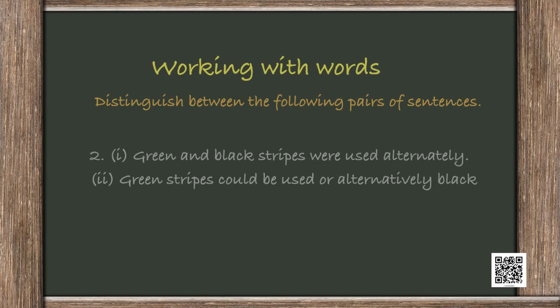'Green and black stripes were used alternately' versus 'green stripes could be used, or alternatively black ones.' Alternately means one after the other — like a zebra crossing where black and white are present alternately. Alternatively, on the other hand, means instead of. So instead of Amitranjan we could have someone else — alternatively we can have X, Y, Z person. In this example, either green stripes could be used or black ones, not both like zebra crossings.